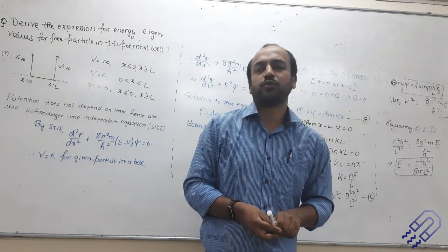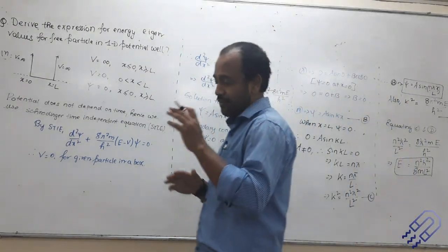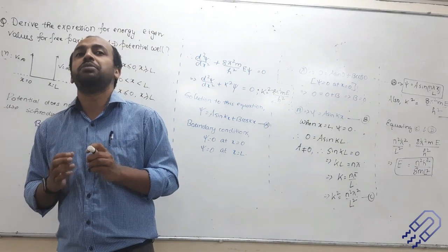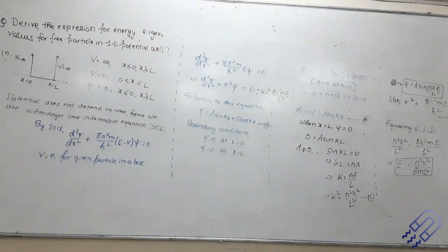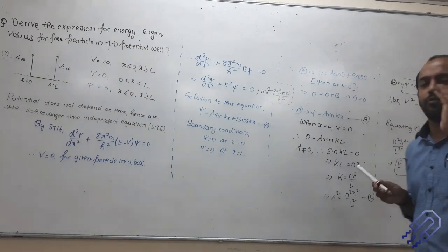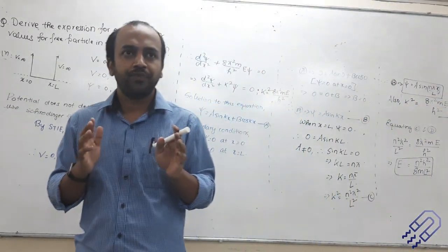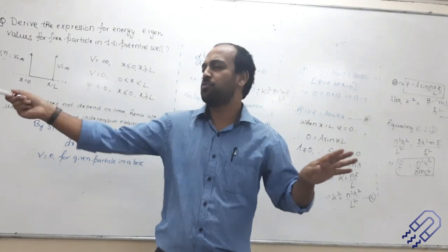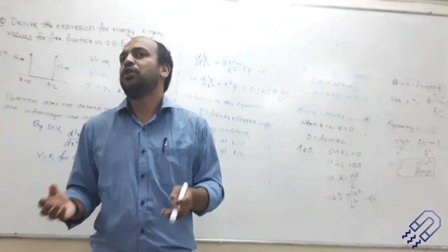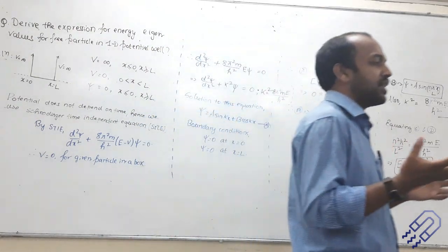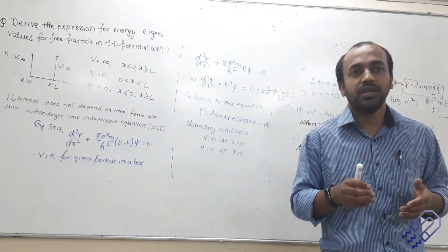So this is the particle in a box problem. Let us understand this after I tell you what exactly we mean by potential. Imagine this door is locked from outside and I cannot escape from anywhere — I am confined within this room. How much potential is the wall providing? Infinity. I cannot escape this room; I am confined within it.